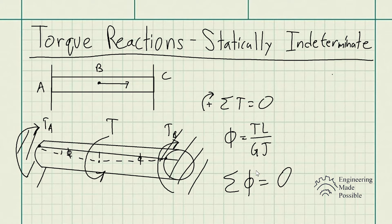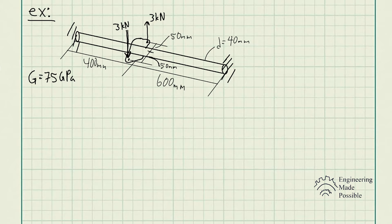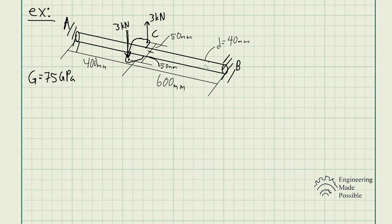Let's do an example. The steel shaft has a diameter of 40 millimeters and is fixed at its ends A and B. If it is subjected to the couple moment, determine the maximum shear stress in regions AC and CB of the shaft. The shear modulus G is given as 75 gigapascals. We have points A, B, and C with all the necessary dimensions.